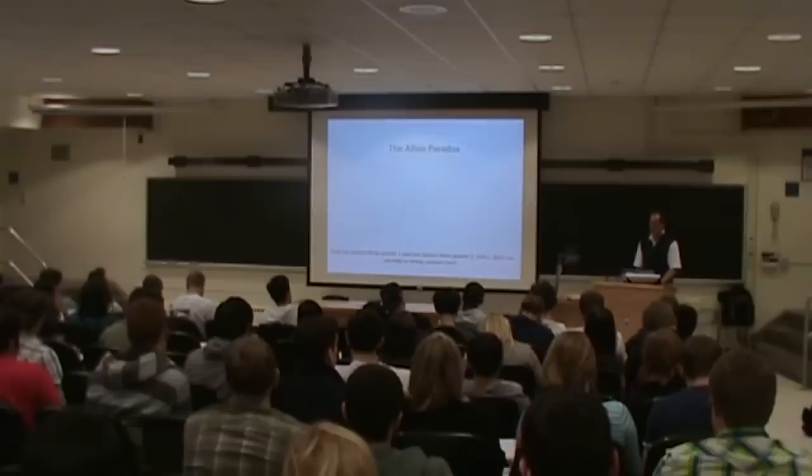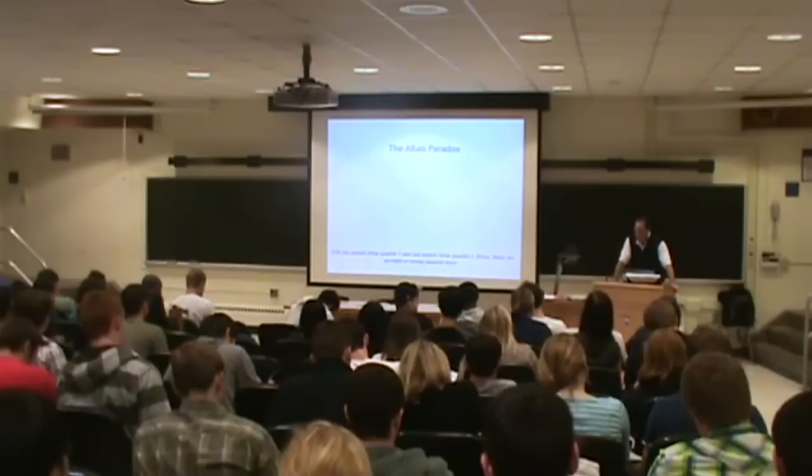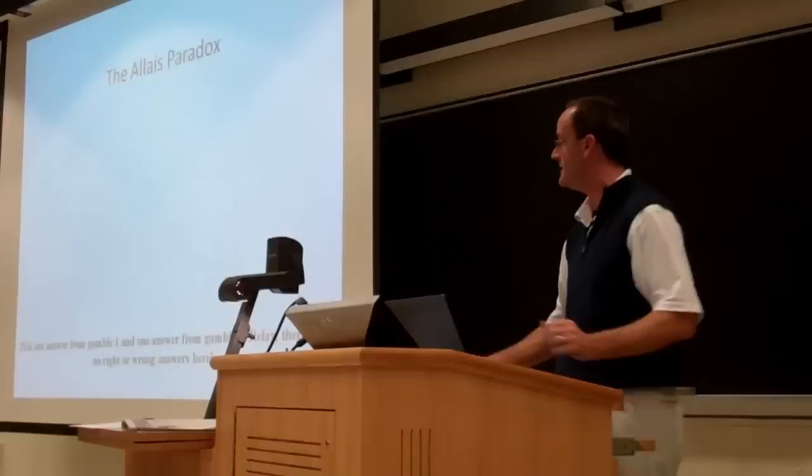The one economist who came to help us here, his name is Maurice Allais. He won the Nobel Prize for constructing the following set of gambles that I'm going to ask you to look at. This is exactly what he did.